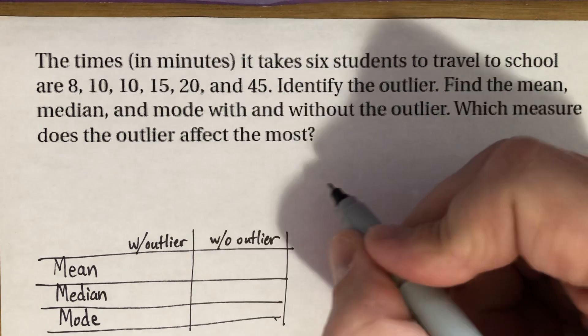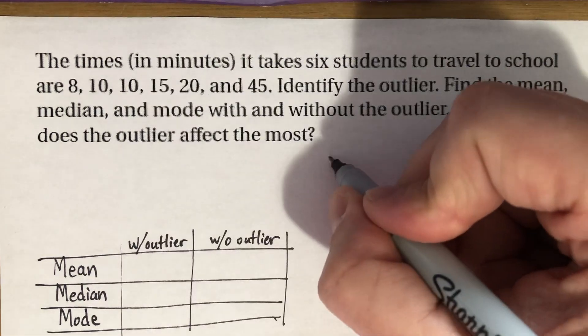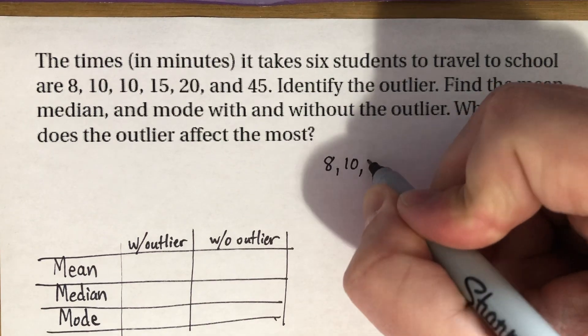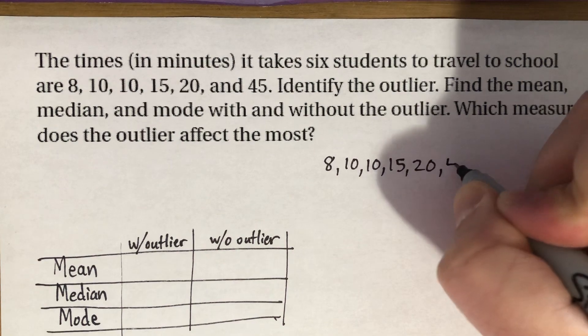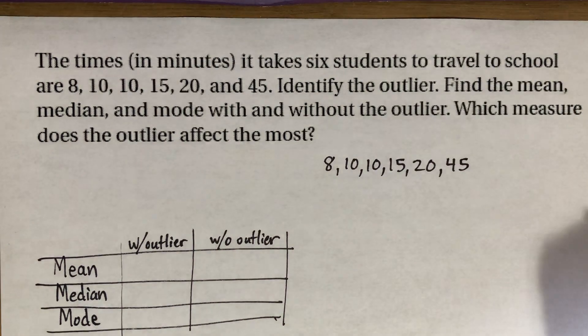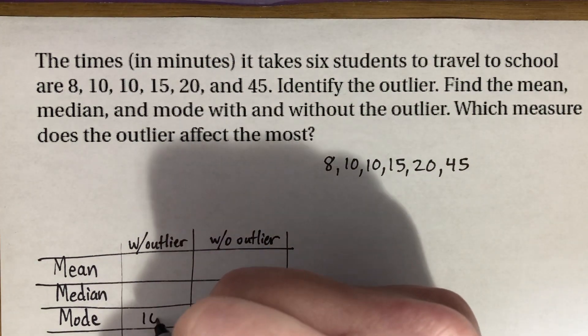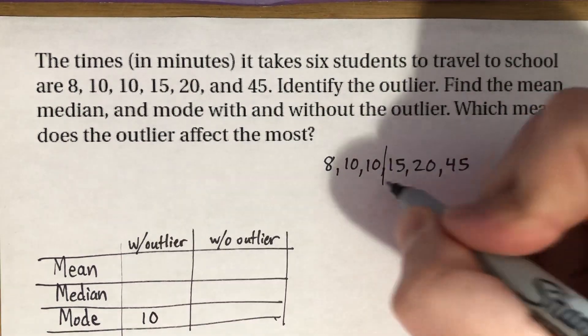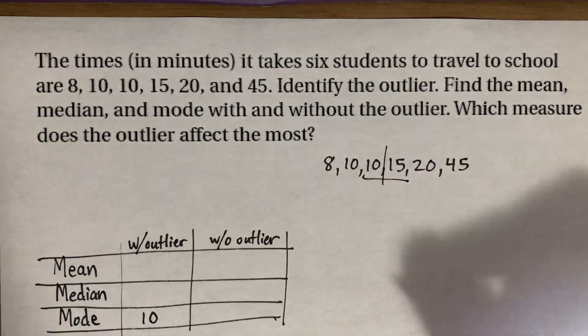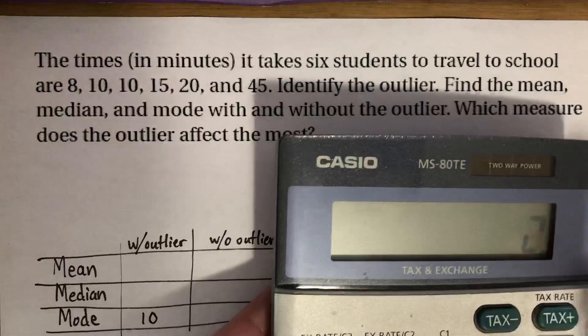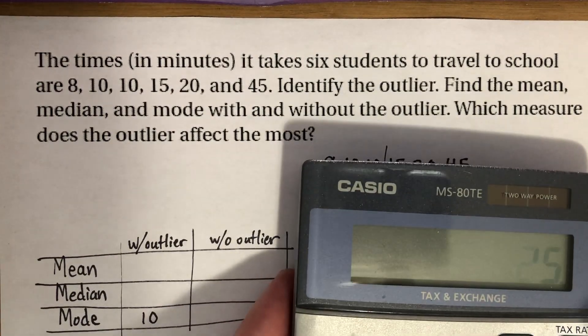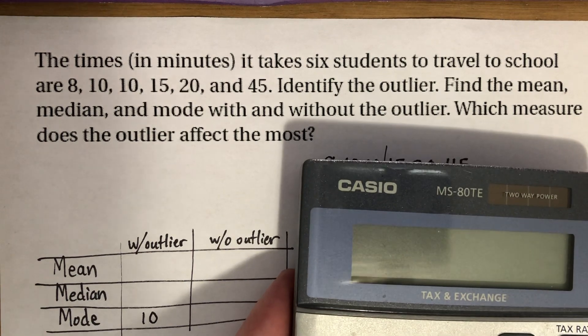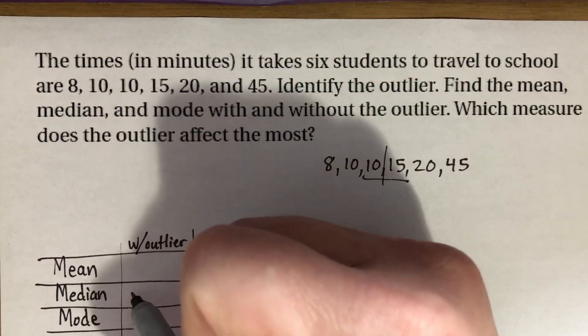So we're going to do it with the outlier first. So we've got 8, 10, 10, 15, 20, 45. Clearly, my mode is going to be 10. And my median would be between 10 and 15. So I'll break out that calculator, and go ahead and do 10 plus 15, and then divide by two. And I get 12.5 for my median.